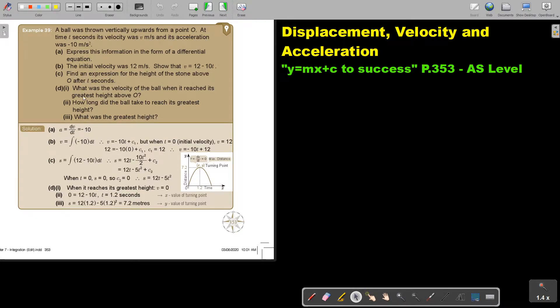Let's look at another example. A ball was thrown vertical upwards from a point O. At the time T seconds, its velocity was V meters per second and its acceleration was negative 10 meters per second squared.